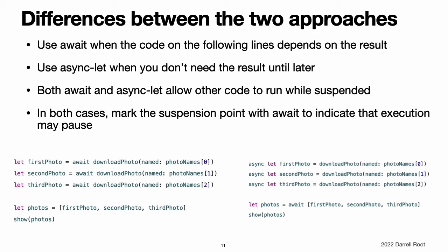Call asynchronous functions with await when the code on the following lines depends on that function's result — this creates work that is carried out sequentially. Call asynchronous functions with async let when you do not need the result until later in your code — this creates work that can be carried out in parallel. Both await and async let allow other code to run while they are suspended. In both cases, you mark the possible suspension point with await to indicate that execution will pause if needed until an asynchronous function has returned. You can also mix both of these approaches in the same code.